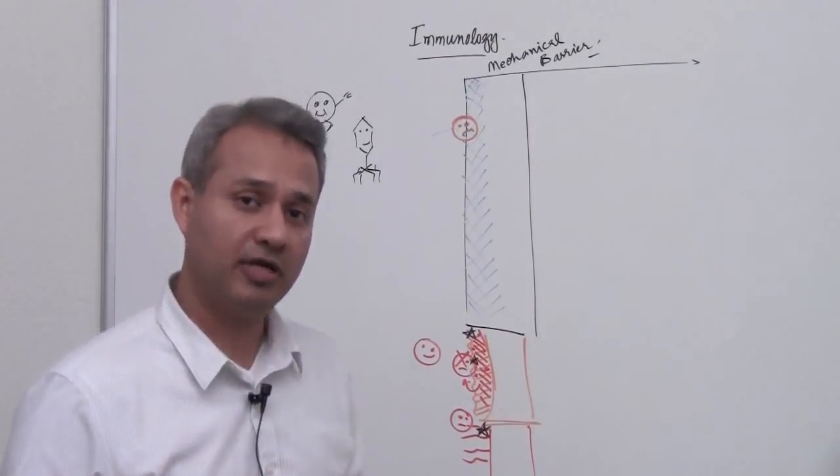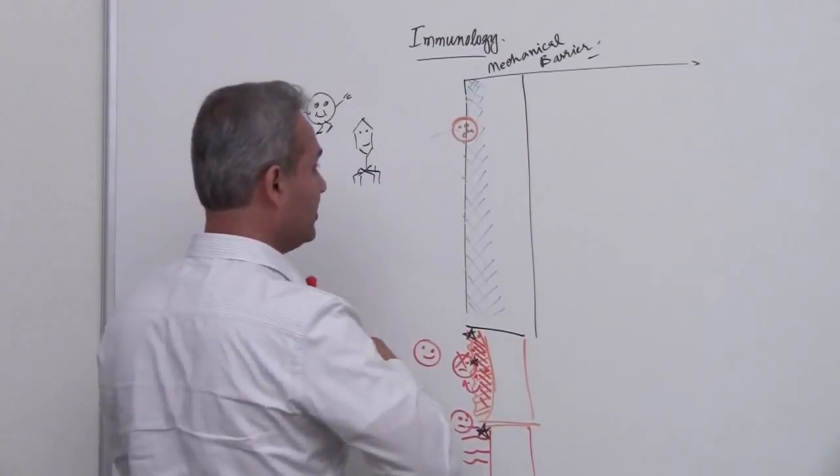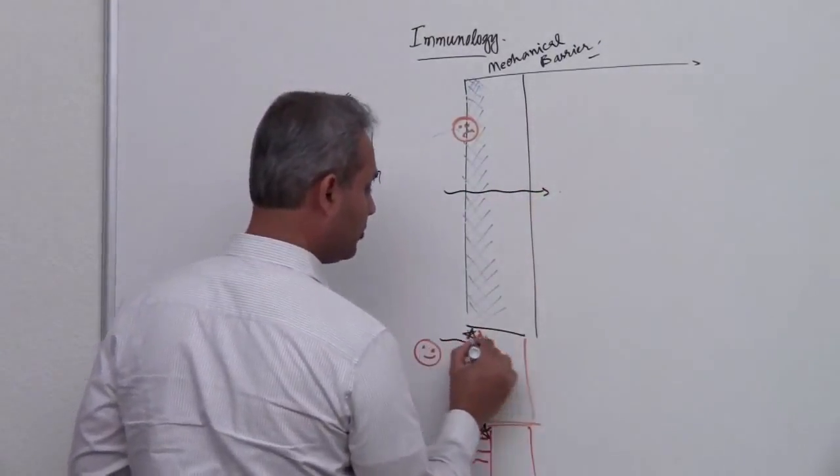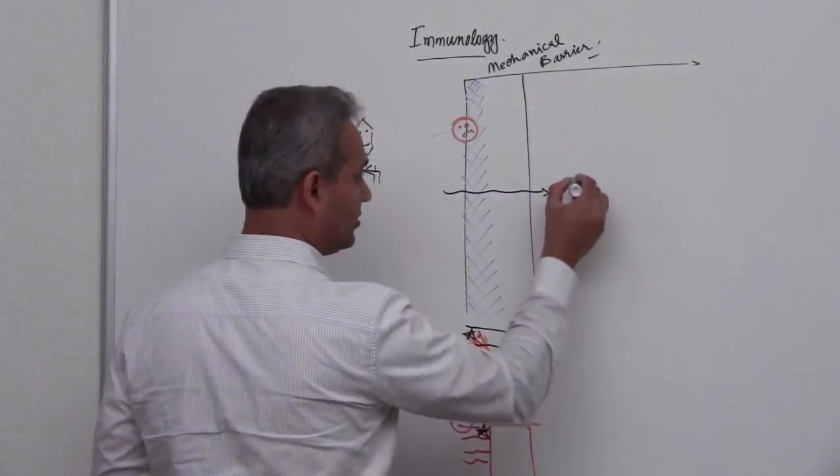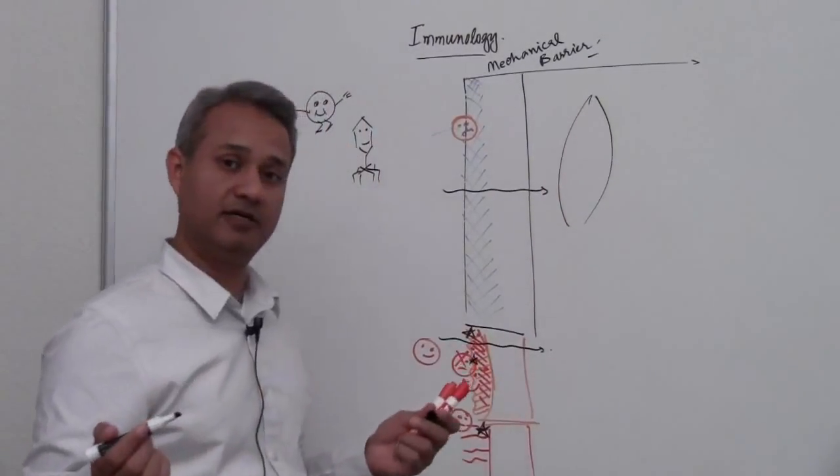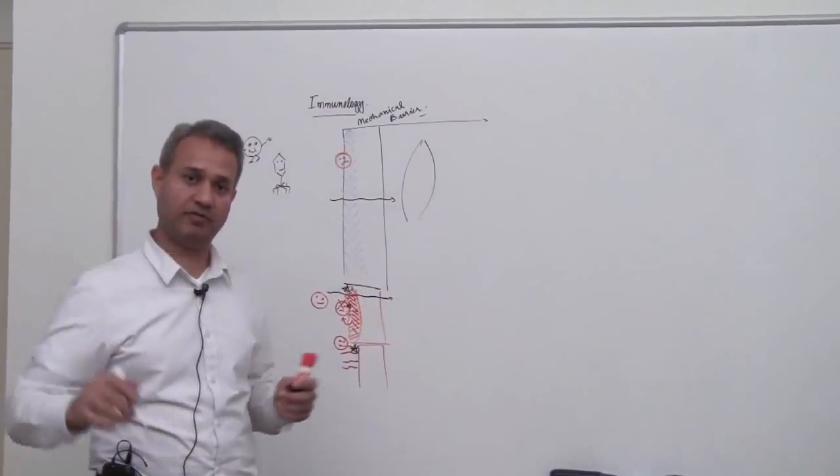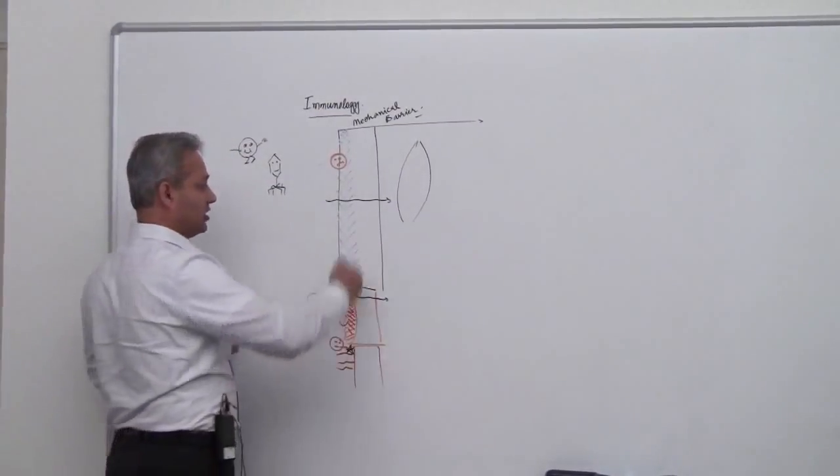So what does the microorganism want at the end of the day? It wants to be able to breach through our skin or the mucous membranes, enter our body tissue and really eat it and be happy in there, circulate in the tissue and do all kinds of stuff.